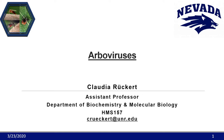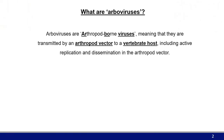Today you will learn a lot about arboviruses themselves, but also about their vectors, because I think it's impossible to understand arboviruses without understanding vector-borne transmission itself. The term arboviruses is an abbreviation for arthropod-borne viruses, meaning that these viruses are transmitted by an arthropod vector to a vertebrate host, and this process includes active replication and dissemination in the arthropod vector. These viruses are not transmitted mechanically by contaminating the mouth parts of the arthropod — they do actually infect and replicate in them.